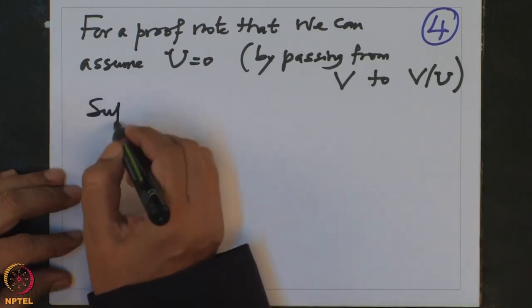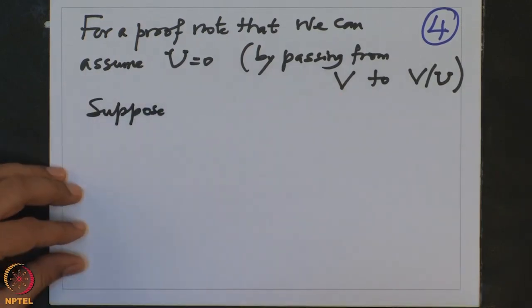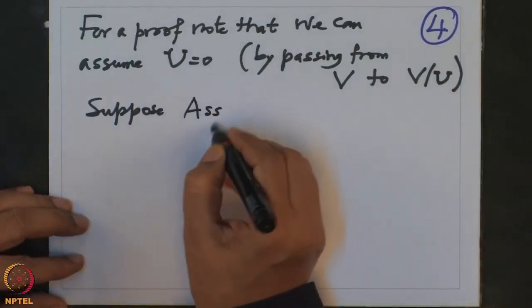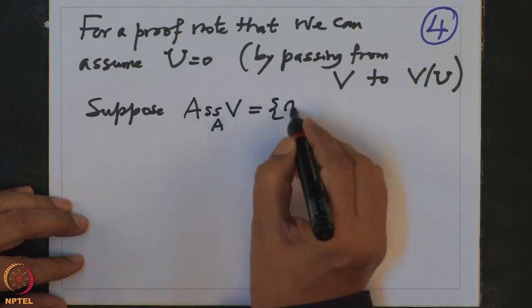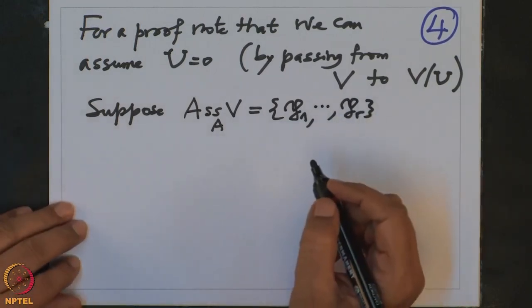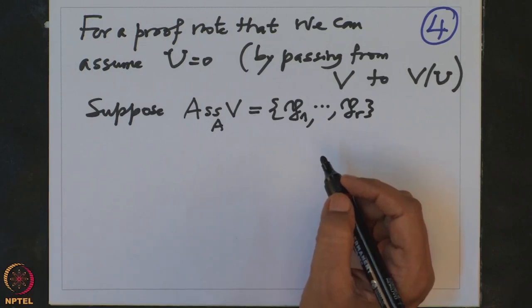So we can assume U is 0. Now suppose we want to construct the Q_i's. The third condition states that the associated primes of V/U are precisely P_1 to P_R, so we already know the associated primes of V, which are finitely many prime ideals P_1 to P_R. By the earlier theorem — which says that given any subset of the associated primes we can find a submodule whose associated primes are precisely the given set — there exists for each i, a submodule Q_i.